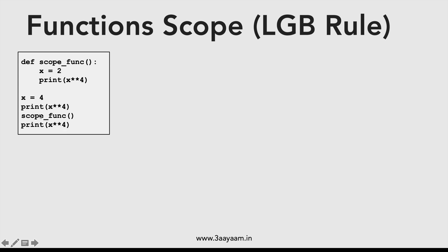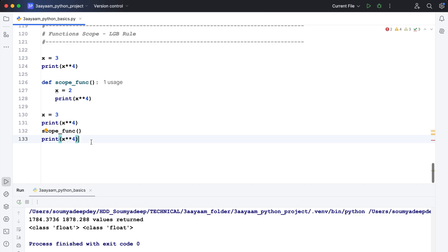Think about what the values would be. For the first one it would be 4 to the power 4. But what about the second and third? In the second, I'm calling the function where x is assigned to 2, and after coming out there's no further assignment — so would it retain the value 2, or revert to 4? You can pause and think about it.